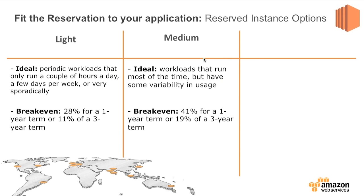A step up from light is a medium reserved instance, for workloads that run most of the time but have some level of variability. The savings are still significant — you break even if you use it more than 41% for a one-year term, or 19% for a three-year term. That might be for your web servers when you're scaling up and down, or an application you know will run for a period of time — maybe nine months — but you're not sure if you'll continue to use it after that.